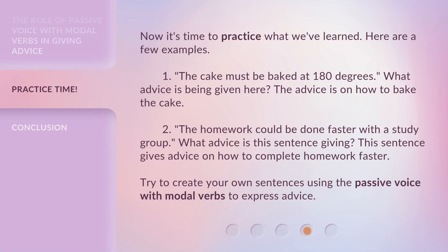Now it's time to practice what we've learned. Here are a few examples. Number one: 'The cake must be baked at 180 degrees.' What advice is being given here? The advice is on how to bake the cake. Number two: 'The homework could be done faster with a study group.' What advice is this sentence giving? This sentence gives advice on how to complete homework faster.